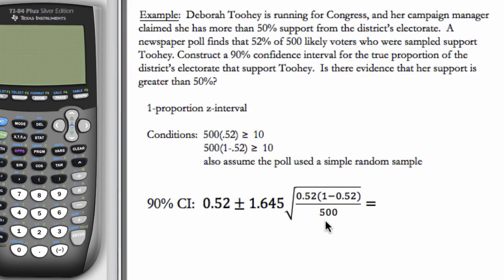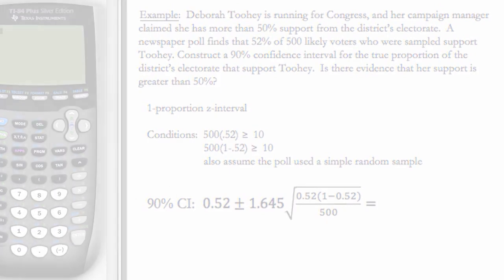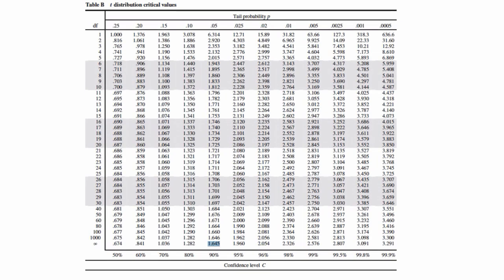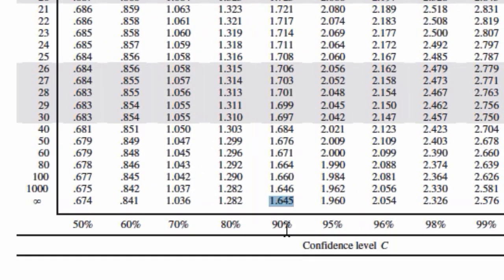Here we have a 90% confidence interval. So to find our Z-star, we can pull up a t-table. We have a confidence level of 90%, so we want this column. For Z-star we always use row infinity, and so that's where the 1.645 comes from.